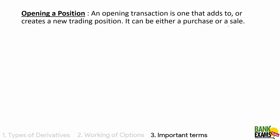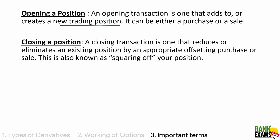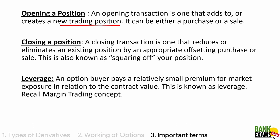There are three important terms. An opening transaction is one that adds to or creates a new trading position. When you create a new trading position that is opening a position; when you close or exit that position that is closing a position, or squaring off your position. Regarding leverage: an option buyer pays a relatively small price to trade — for example, for a contract worth 100 rupees, he may pay only 15 or 20 rupees. Please recall the margin trading concept covered in a previous session.